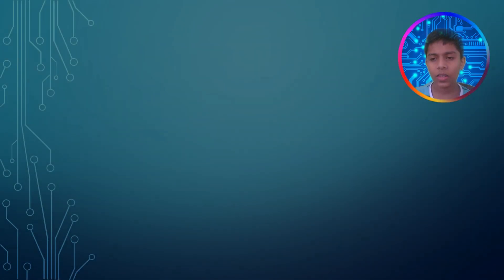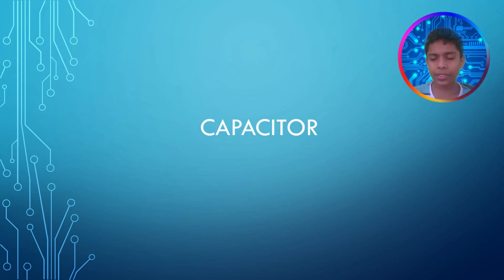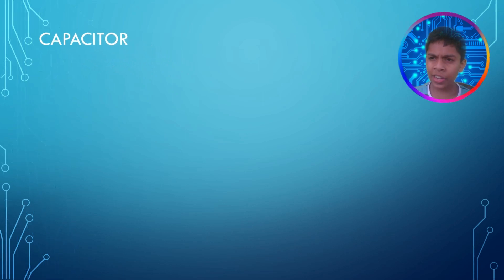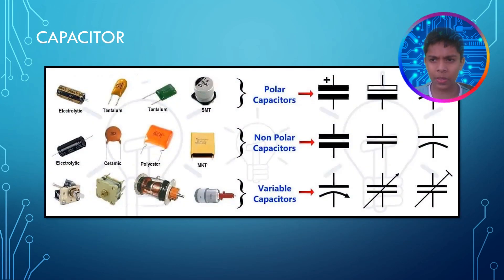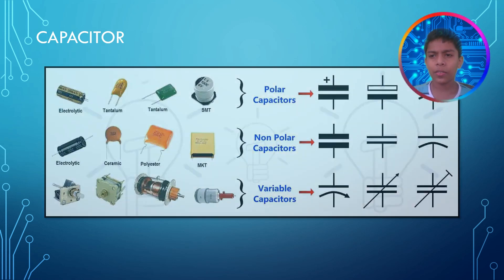The next component we are talking about is capacitors. There are three types of capacitors: polar capacitors, non-polar capacitors, and variable capacitors. Capacitors use the technology of static electricity to work.